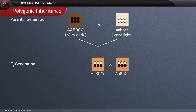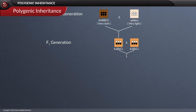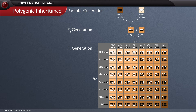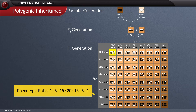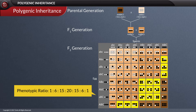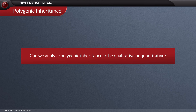When two persons representing the same intermediate condition are crossed, we analyze whether polygenic inheritance is qualitative or quantitative.